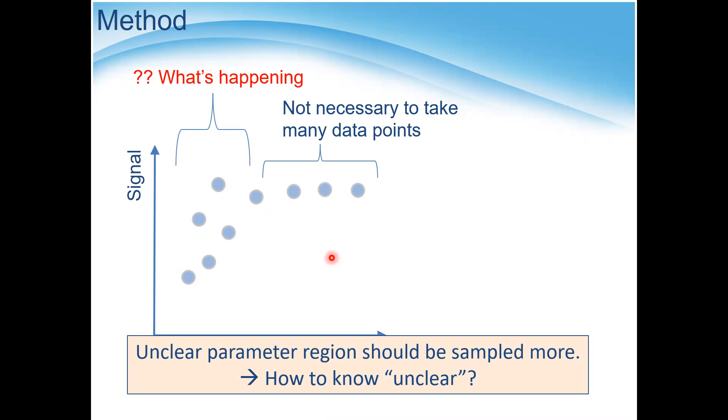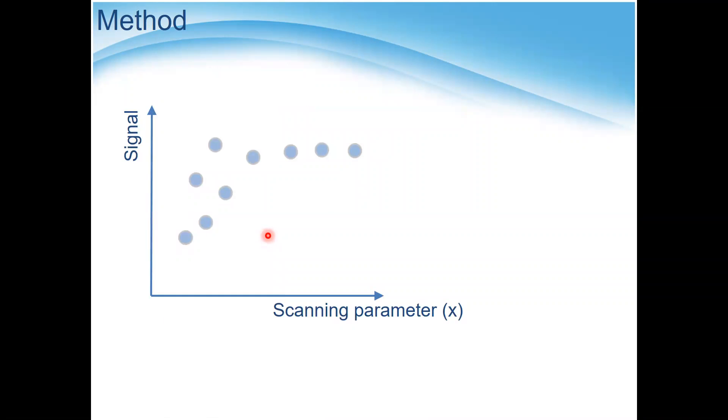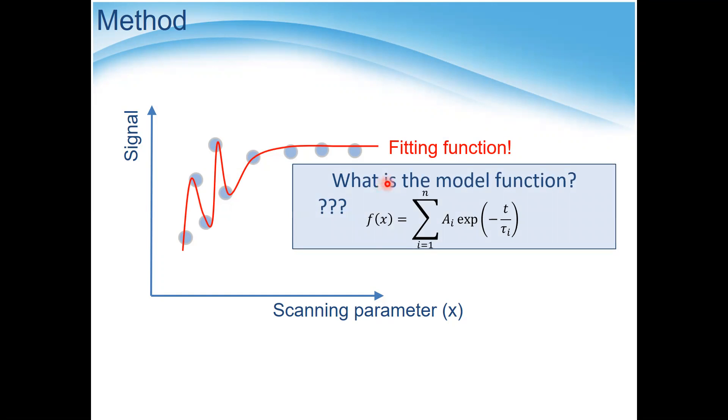The unclear region must be sampled more. So the key is how to know this unclear region. Usually we make a fitting function for a signal to estimate which part is correct and not. In many cases, we assume the model function for a natural phenomenon. We frequently use the exponential function. In this case, the summation of multi-exponential function.